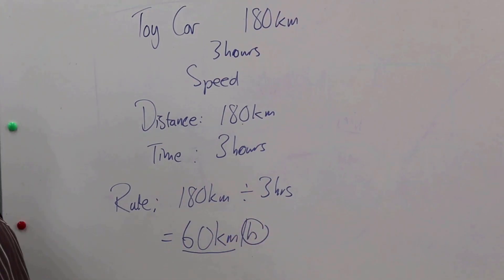And then for our last example, we have the factory. A factory produces 1200 bottles of juice every four hours. Now they then word the question like this: what is the production rate?